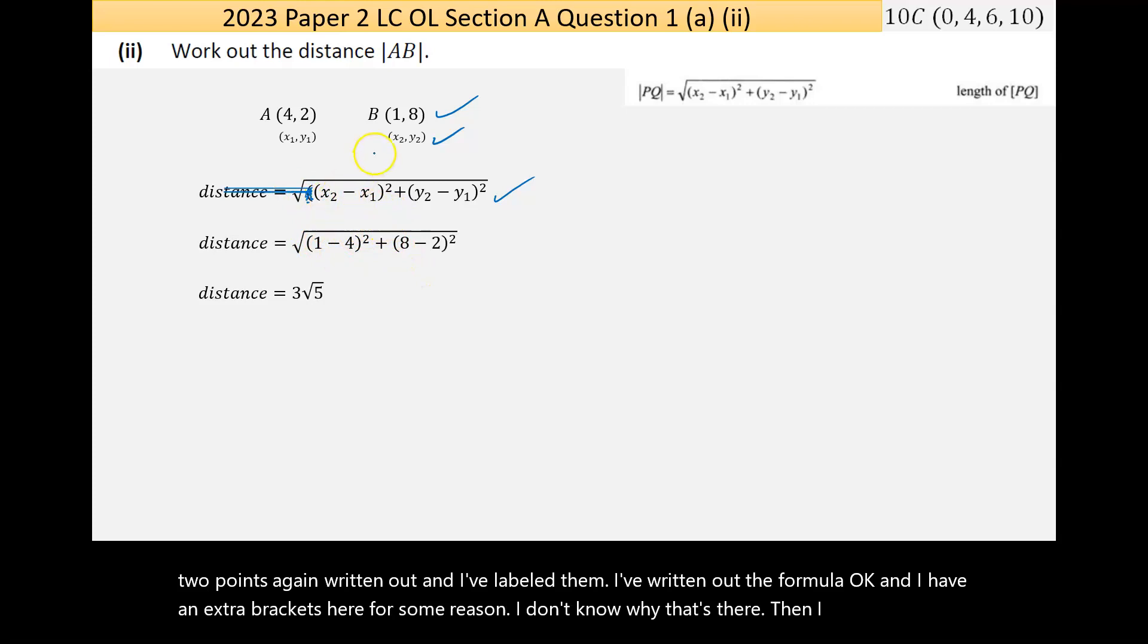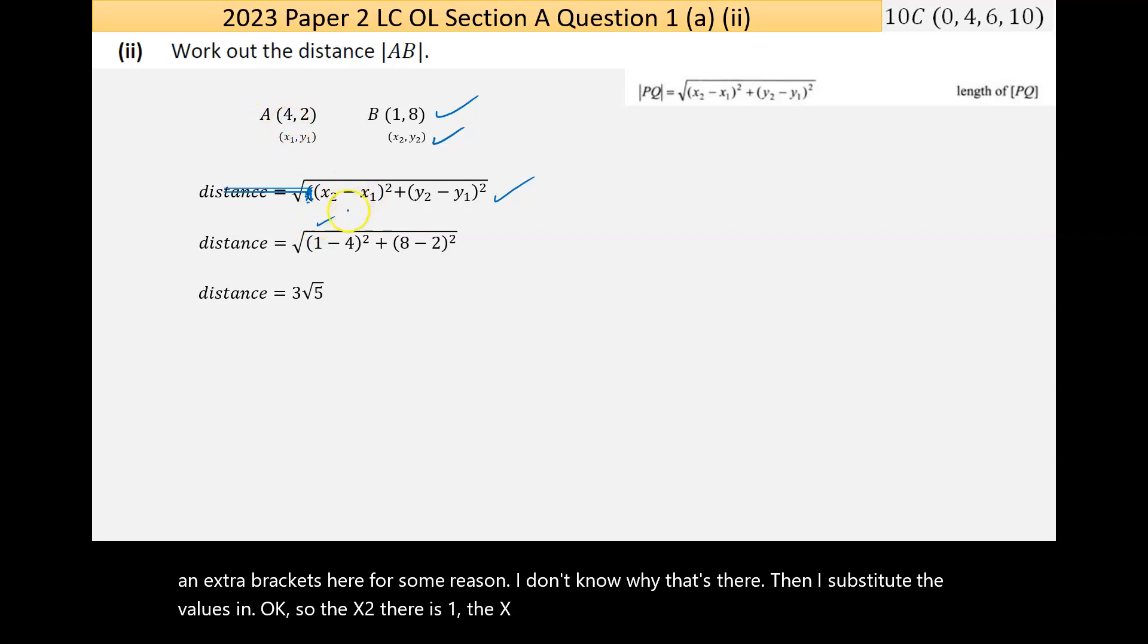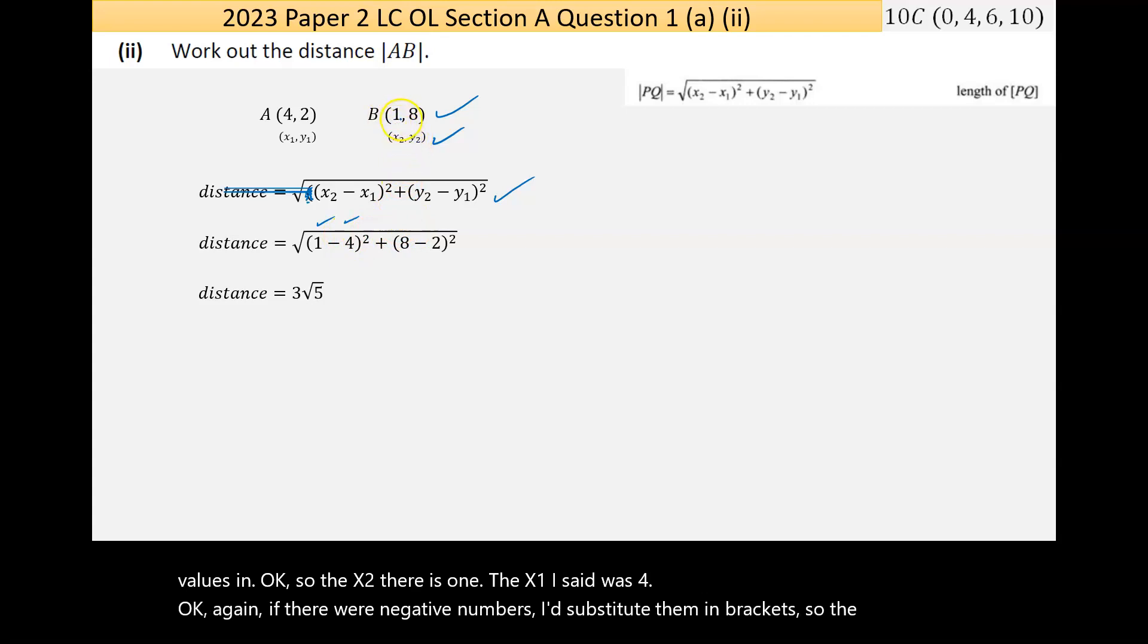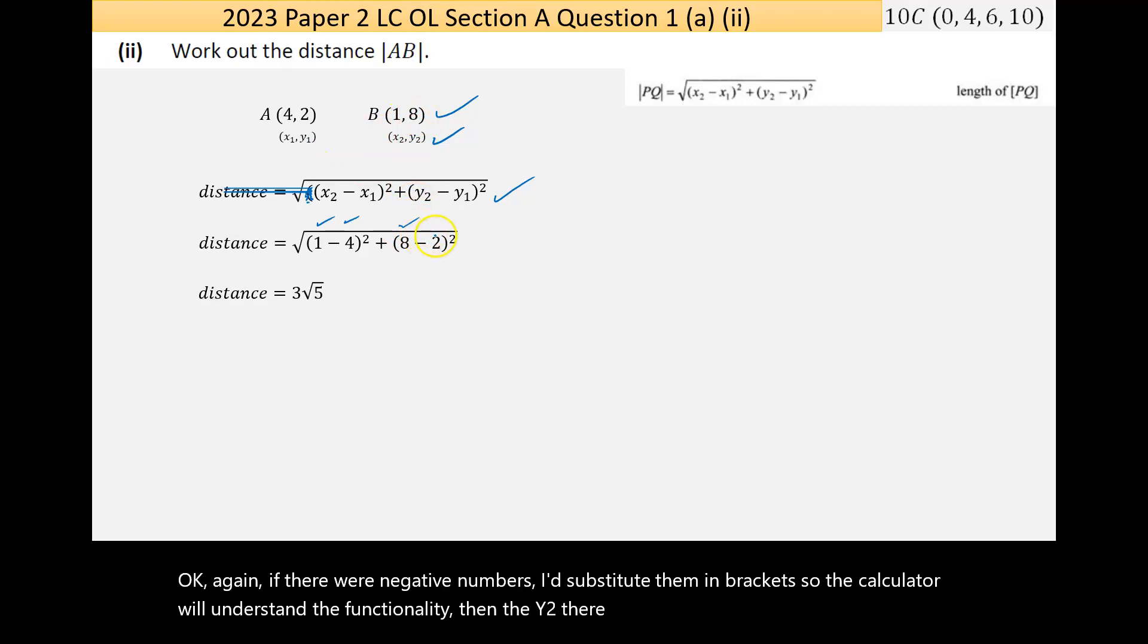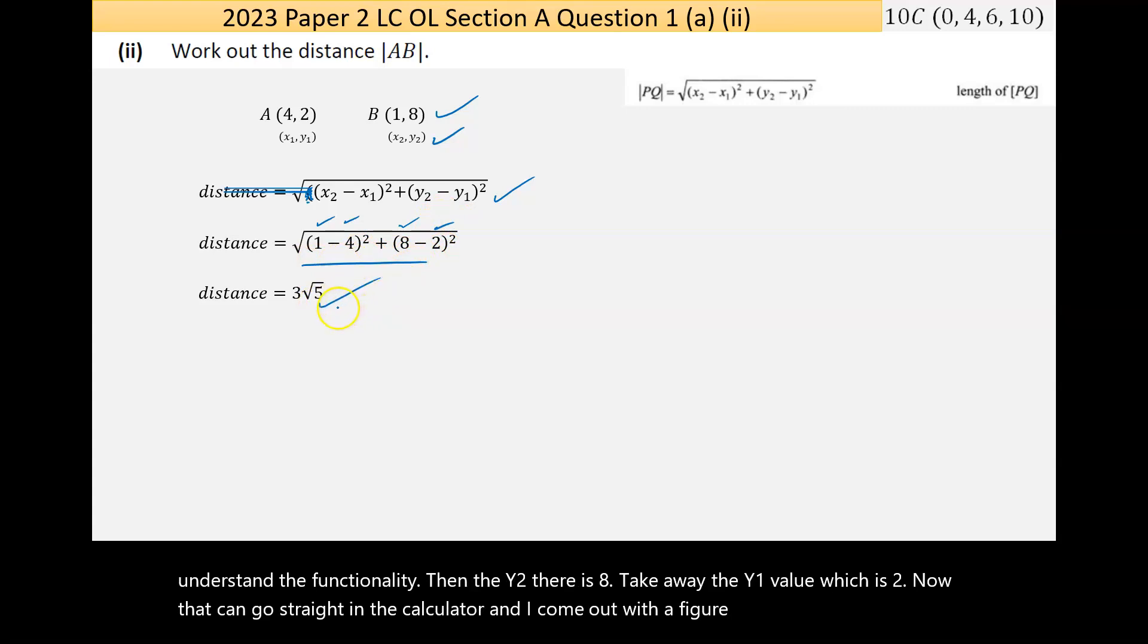I substitute the values in. The x2 there is 1, the x1 is 4. If there were negative numbers, I'd substitute them into brackets so the calculator will understand. The y2 there is 8, take away the y1 value which is 2. That can go straight in the calculator and I came out with 3 times the square root of 5.